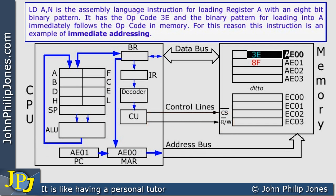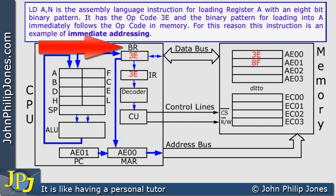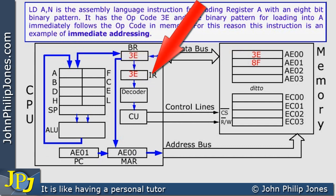The contents of the control lines and the address bus continue to the memory, where they select location AE00. The binary pattern at that address is transferred via the data bus to the buffer register, and from the buffer register to the instruction register — abbreviated BR and IR respectively on the diagram.